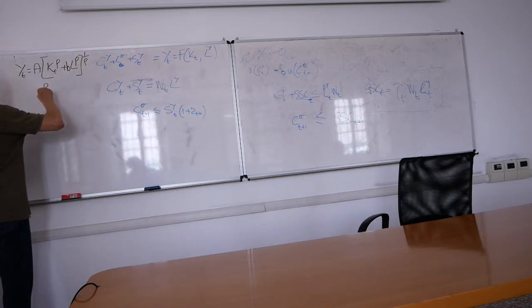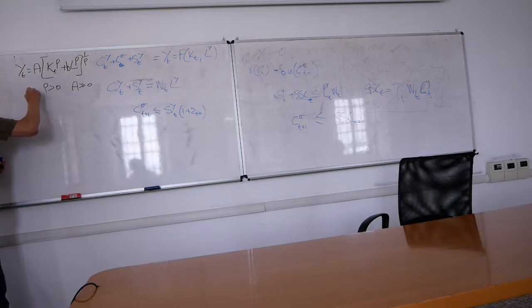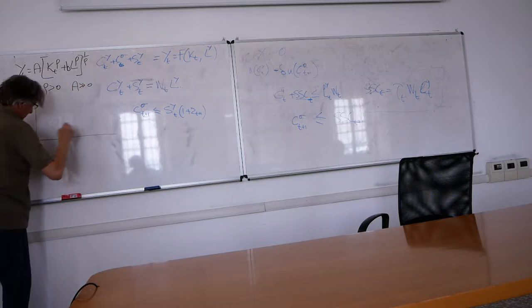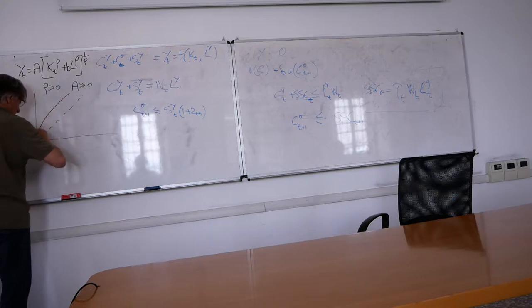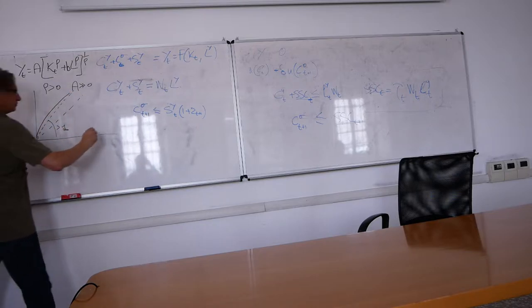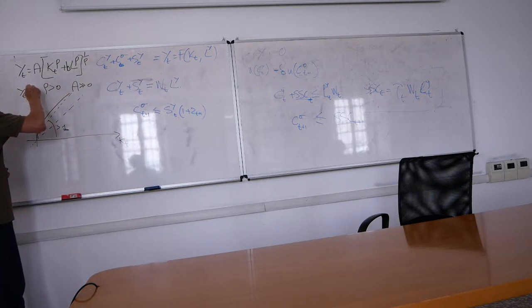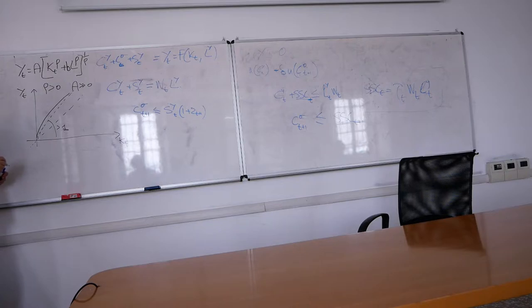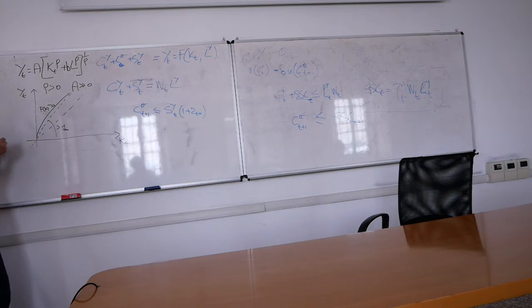We know that the path is a 45 degree line and the production function does like this. We have an asymptote at something larger than one. That's our model.